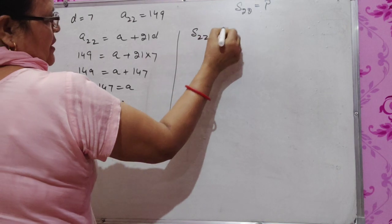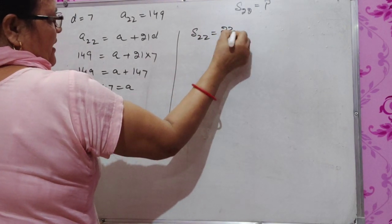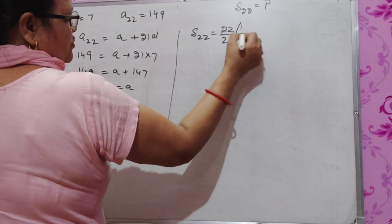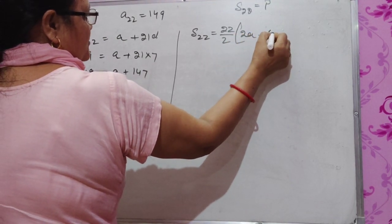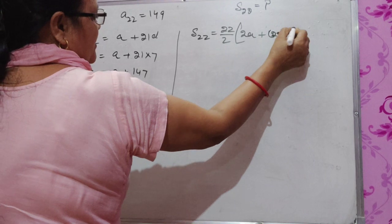S_22 equals 22 by 2 times [2a plus (n minus 1) times d], which is 22 minus 1 into d.